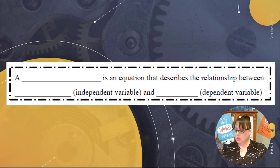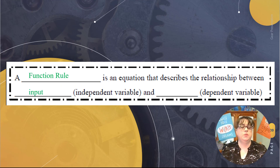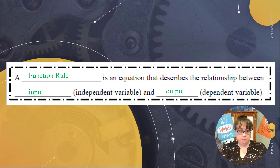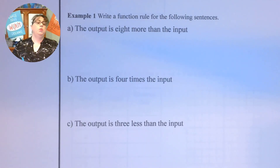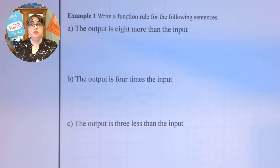Let's go ahead and get started with some definitions. A function rule is an equation that describes the relationship between an input, or the independent variable, and the output, or the dependent variable. We're going to begin by looking at these function rules written in words and then turn them into the equation, or the function rule.